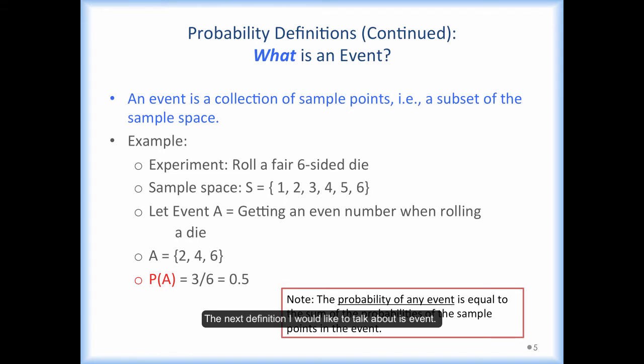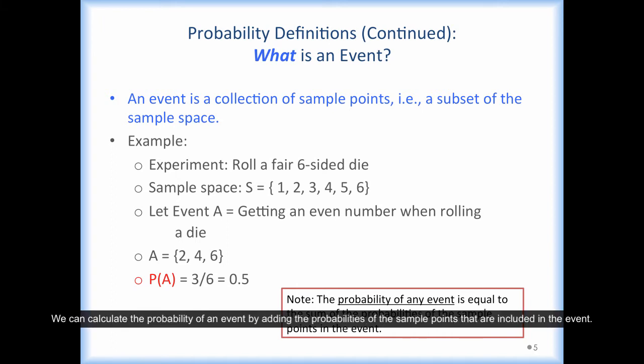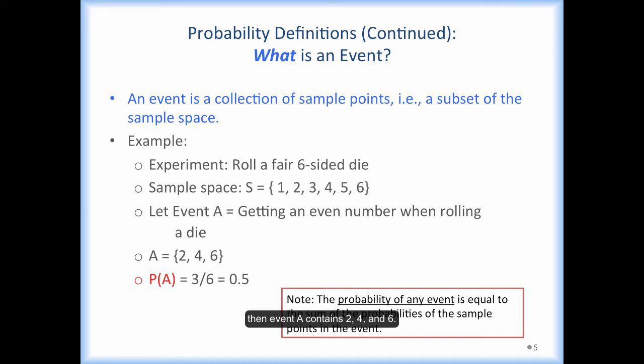The next definition I want to talk about is event. An event is a collection of sample points. We can calculate the probability of an event by adding the probabilities of sample points that are included in the event. Suppose event A is a scenario where we get an even number when we roll a fair die. Then event A contains 2, 4, and 6. In this example, the probability of getting each number is 1 over 6. And the probability of event A is 1 over 6 plus 1 over 6 plus 1 over 6, which adds up to 3 over 6, or 0.5.